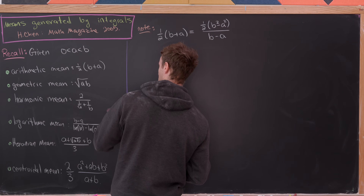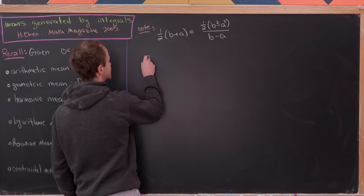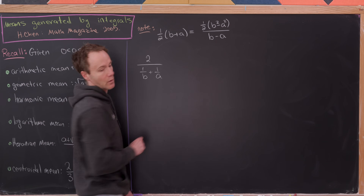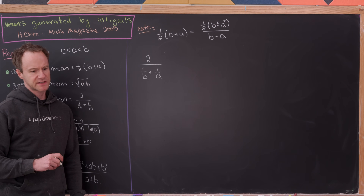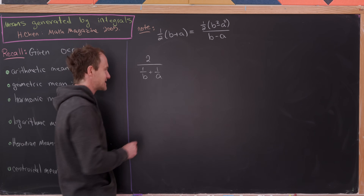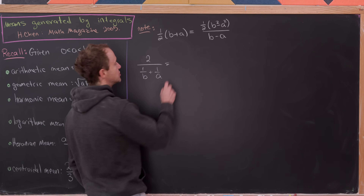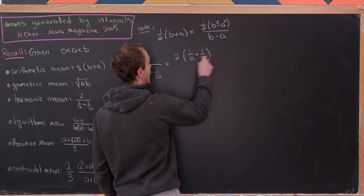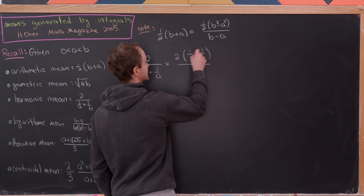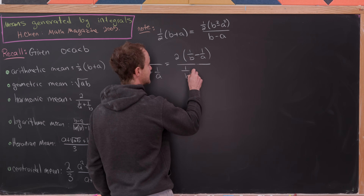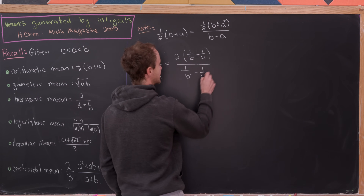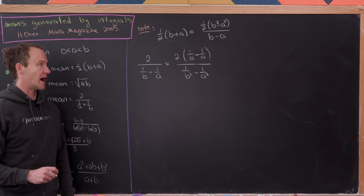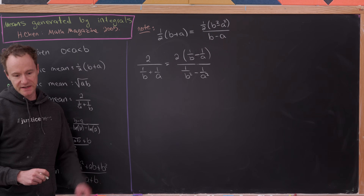Let's take the harmonic mean: two over (1/b + 1/a). We can observe that's the same thing as two times (1/b - 1/a) over (1/b² - 1/a²), simply by multiplying numerator and denominator by (1/b - 1/a).